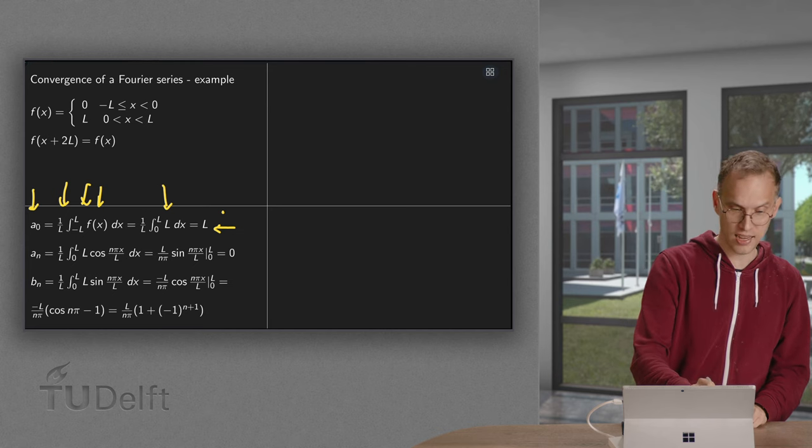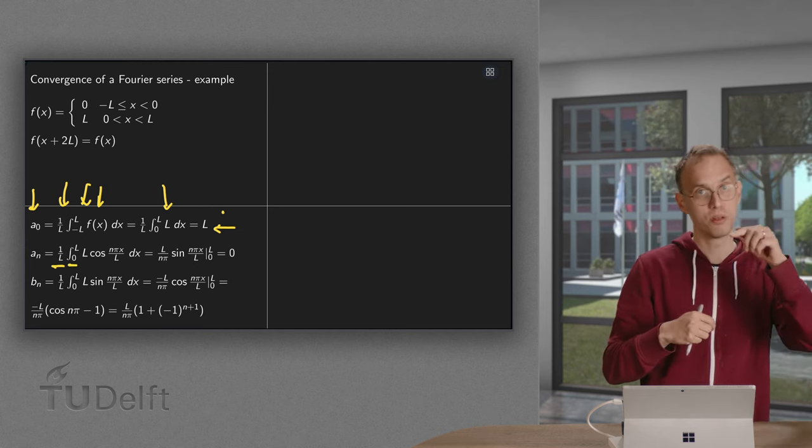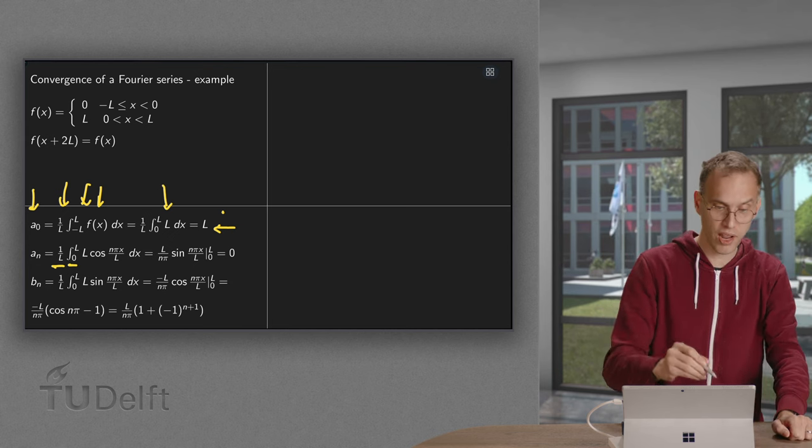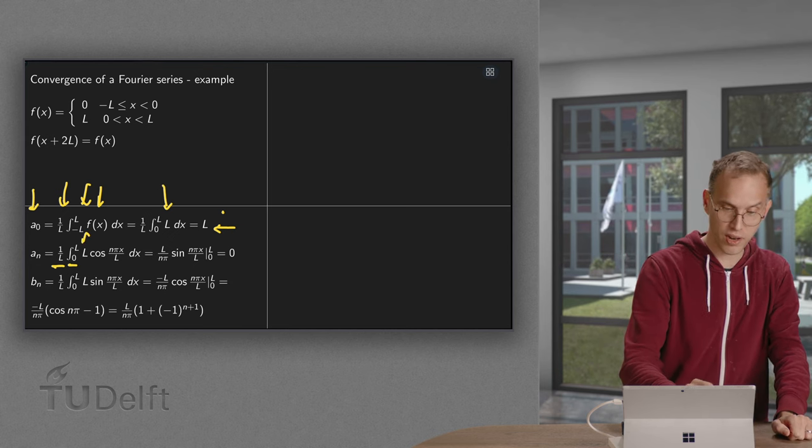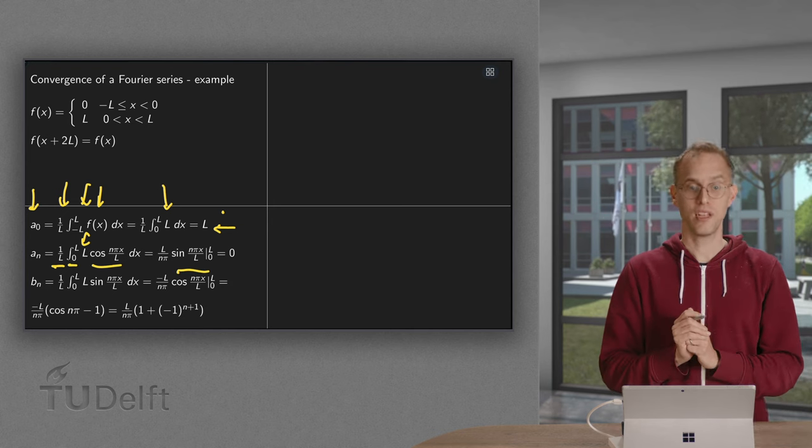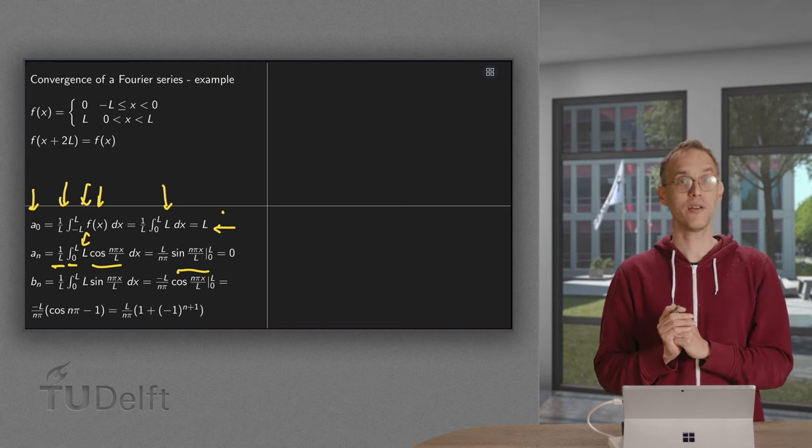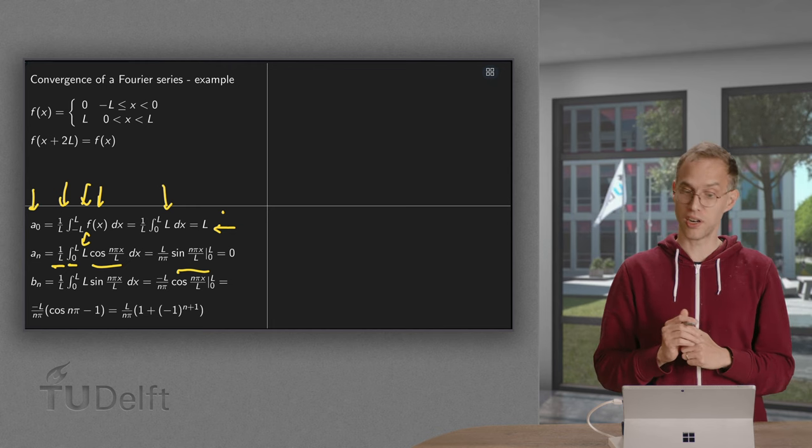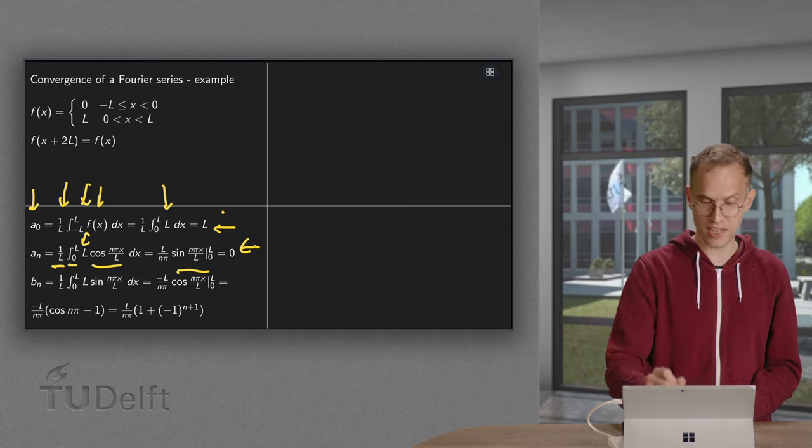Then we compute the aₙ, a 1 over l, integrate from 0 to l again, because between minus l and 0 we are 0 anyway. Between 0 and l we are l, and we have the cosine over here. We integrate, we get a sine, plug in the boundaries, you get a sine of n pi, which equals 0. The sine of 0 equals 0, so the other aₙs are 0.